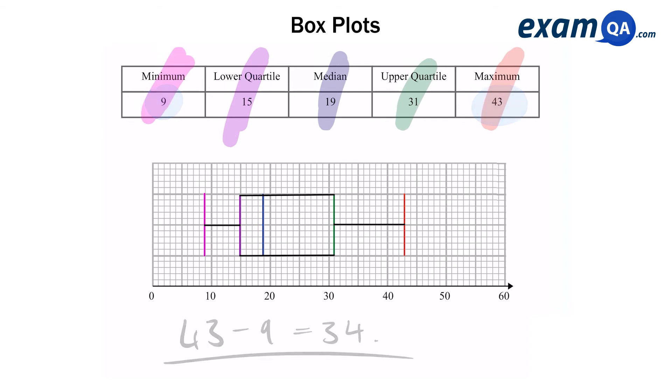Next part: Work out the interquartile range. Now you should remember that from the cumulative frequency video and that is the upper quartile minus the lower quartile, which is 31 take away 15 giving us 16.